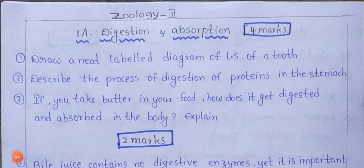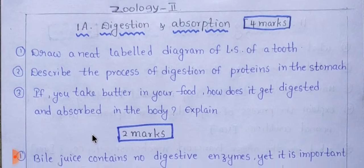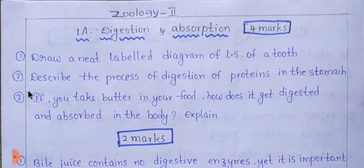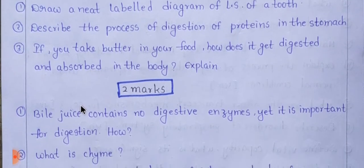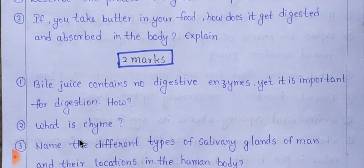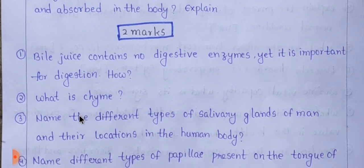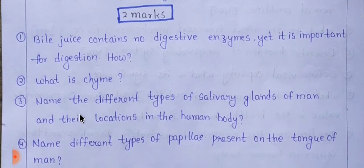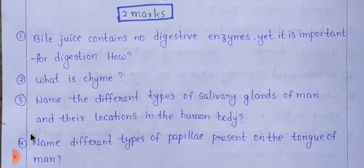Students, let's begin with the first unit — geology. You can use the digest system and absorption topics. Questions carry 4 marks and 3 marks. The next set is 2 marks. You can prepare using these. There are 4-mark questions visible on the screen.